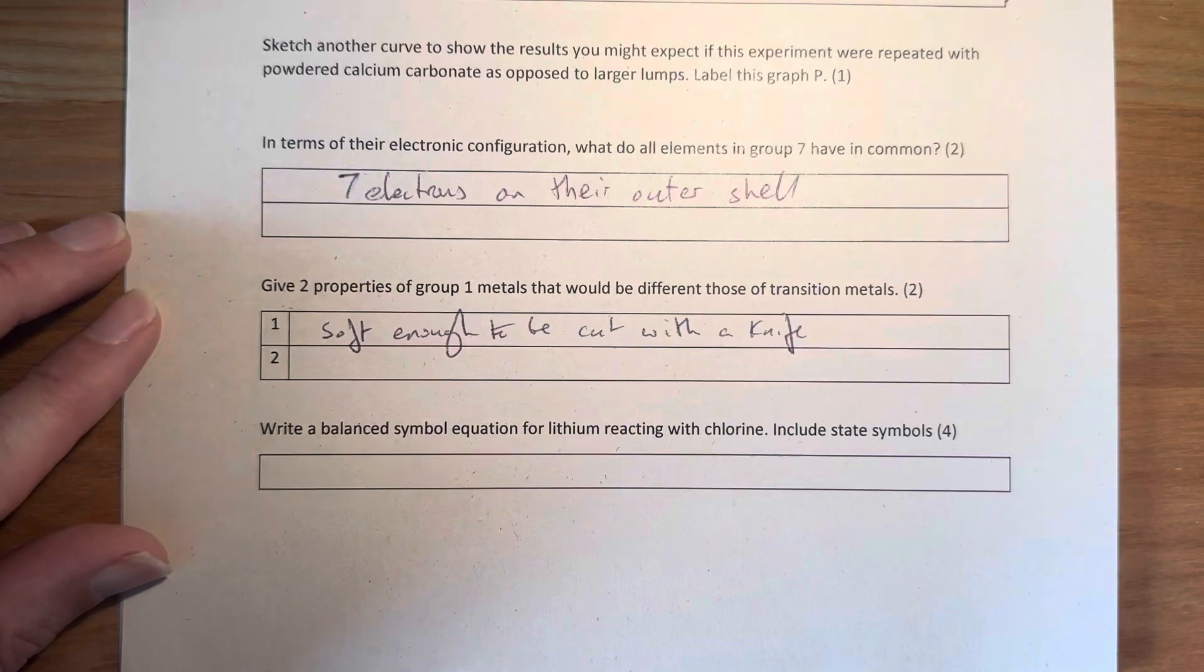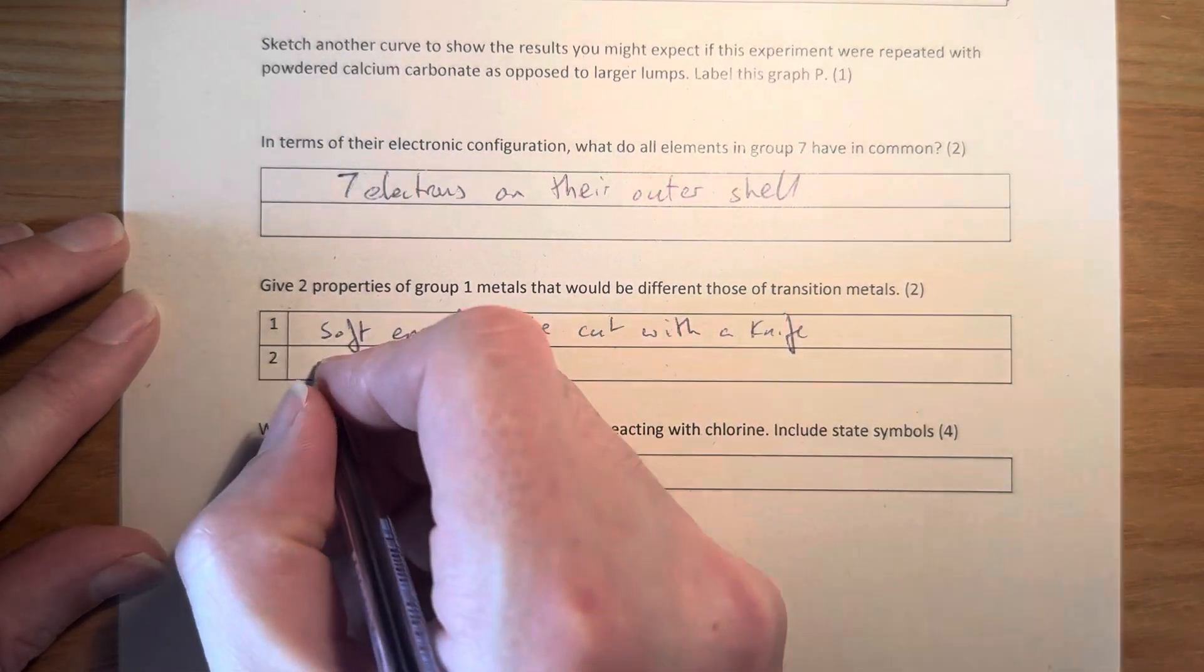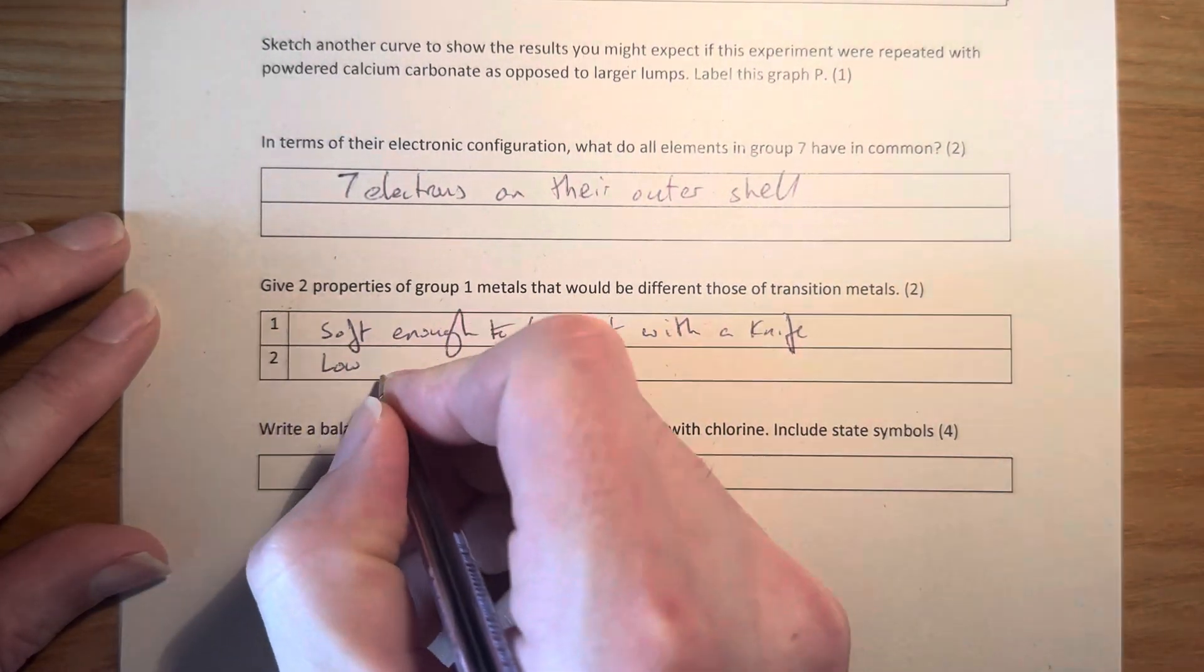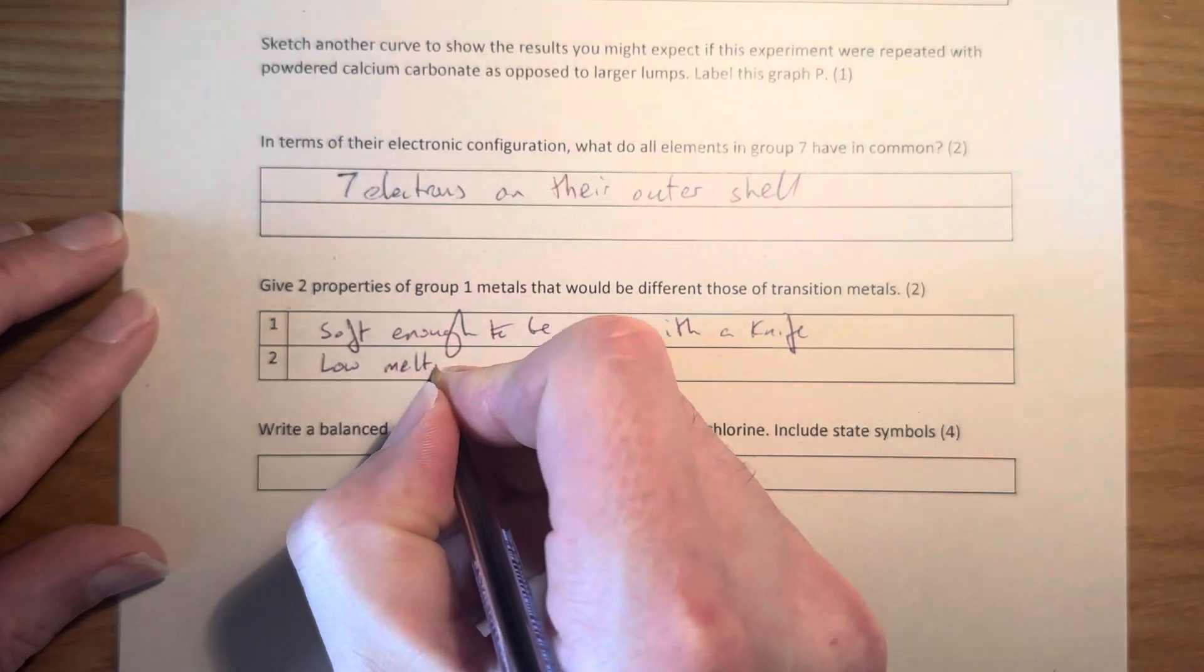The other thing about Group 1 metals - they have low melting points. Transition metals generally have very high melting points.